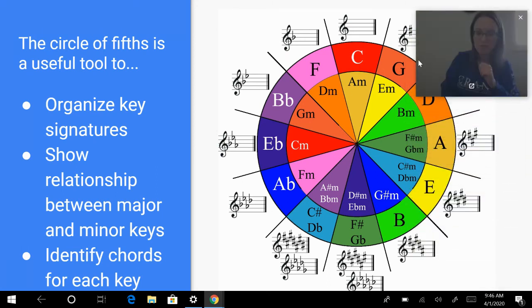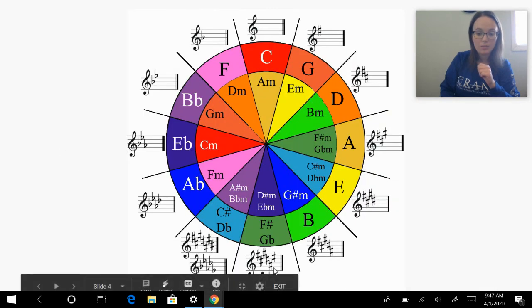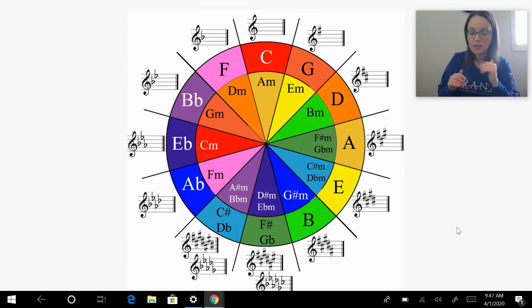One more thing I wanted to point out about the circle of fifths, and let me go back a slide, is at the bottom we do have some of these keys that have two different key signatures. This is where we get into something called enharmonic spelling. Enharmonic spelling means it's the same, it sounds the same, you can just spell it in two different ways.